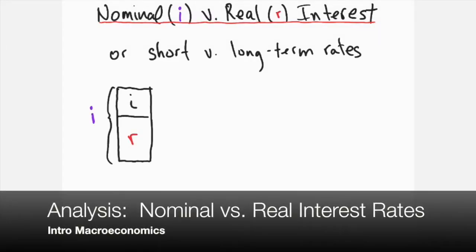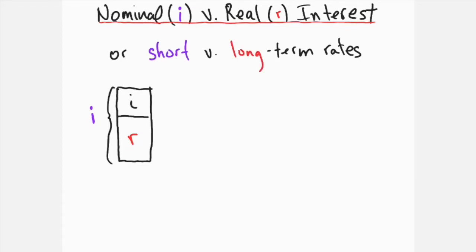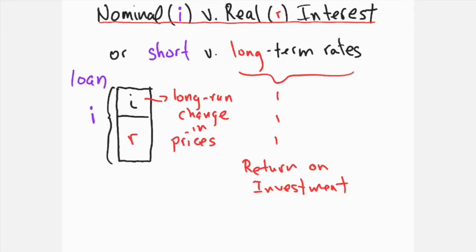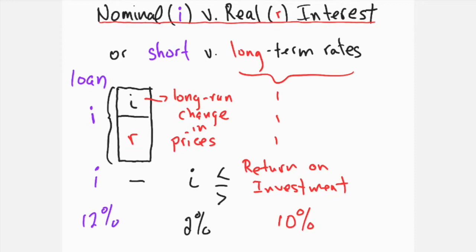Chapter six discusses the market for loanable funds. The return on long-term investment is calculated using long-term interest rates because investment returns — whether through a financial instrument or capital project — are realized over a longer time horizon. Inflation can be measured in the long run, allowing investors to calculate their need for loans based on real interest rates. For example, if you expect two percent inflation yearly and a yield of ten percent on your investment, a loan at twelve percent will allow you to break even.